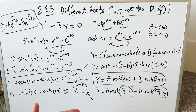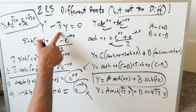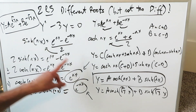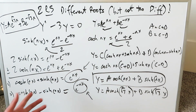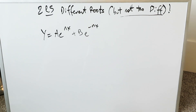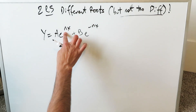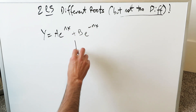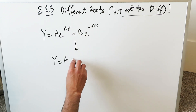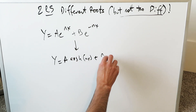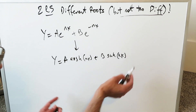y equals a hyperbolic cosine of root 3x plus b hyperbolic sine of root 3x can represent another form of the solution to this style of differential equation, where the roots are two different values that are numerically the same but differ only by sign — positive and negative. When you see a solution in exponential form with this property, you can write it in hyperbolic form and there is nothing wrong in doing so.